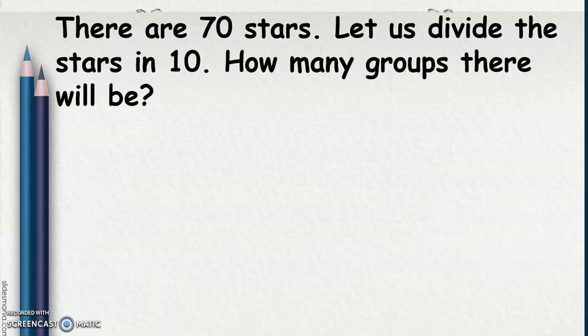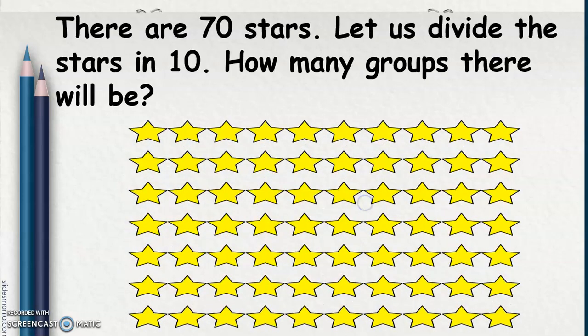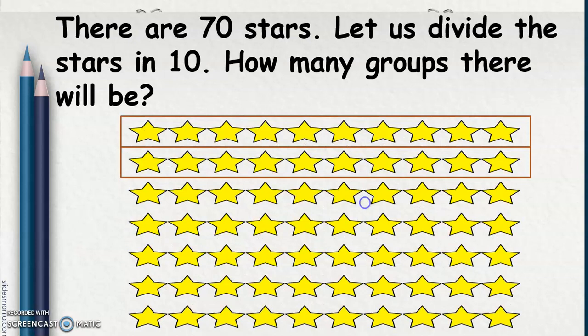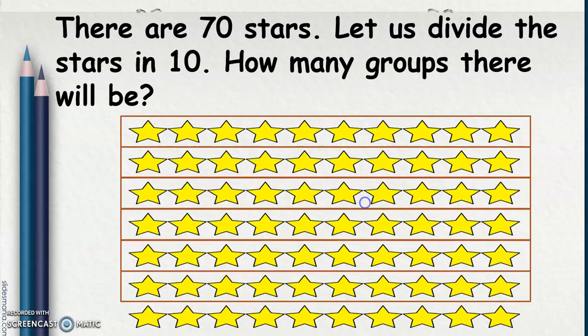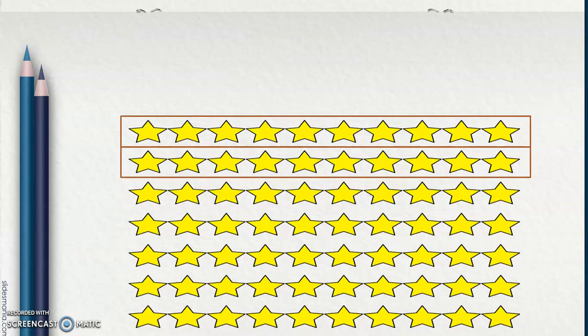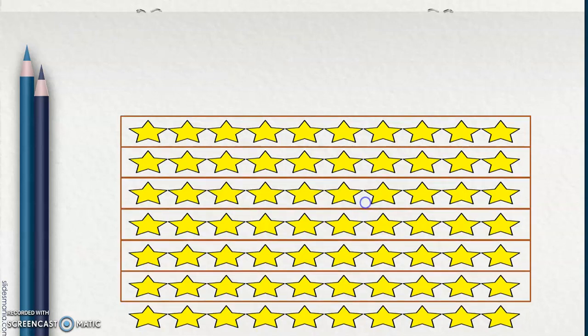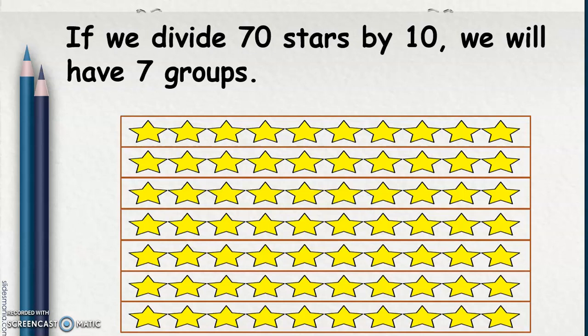Now, there are 70 stars. Let us divide the stars by 10. How many groups will there be? We have 1, 2, 3, 4, 5, 6, 7 groups. So if we divide 70 stars by 10, we will have 7 groups. 70 divided by 10 is 7.